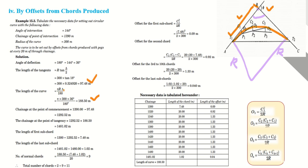From the deflection angle and radius, the length of curve is obtained. Now we need to locate T1 on the line of communication. The chainage of B is given as 1390, so if we subtract the tangent length from 1390, we reach T1. The chainage of commencement, i.e., the start of the curve, is equal to 1292.52.